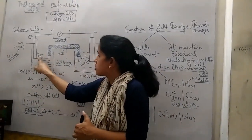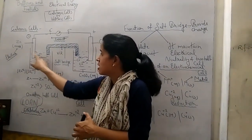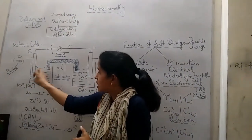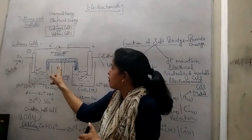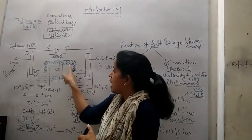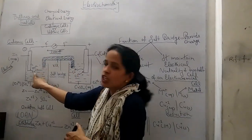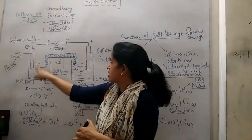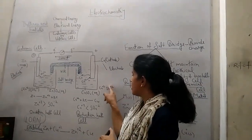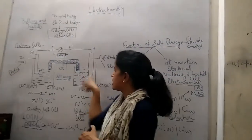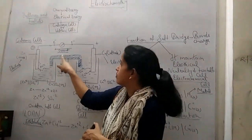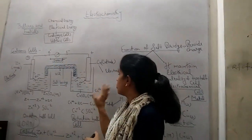When the concentration of Zn²⁺ increases, the same number of Cl⁻ ions come from the salt bridge and neutralize the charge. And the same happens on the other side — when the SO₄²⁻ concentration increases, the same number of K⁺ ions move from the salt bridge to neutralize it.